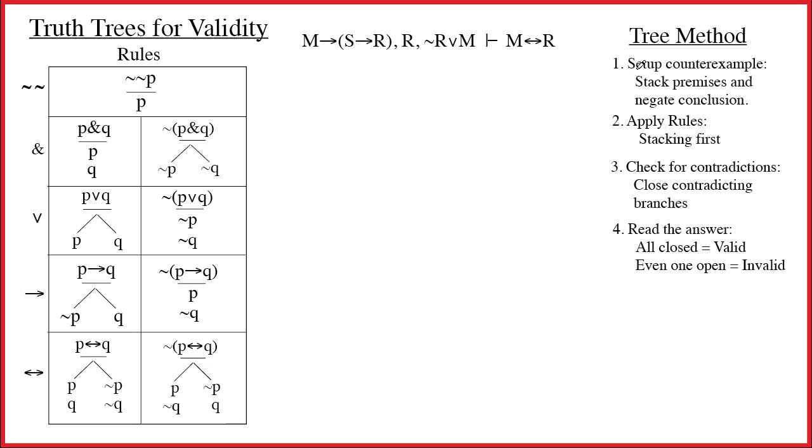Alright, the first step of the method, here's our argument. We've got three premises and then the conclusion, and we know that the first step is to set up the counterexample. This is really easy. If you think about a table, a counterexample is a row that makes all the premises true and the conclusion false. Well, when we do a tree, we want to start with the counterexample. So the setup for the tree is to take all the formulas and stack them one on top of the other.